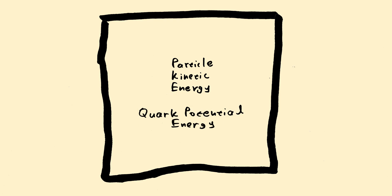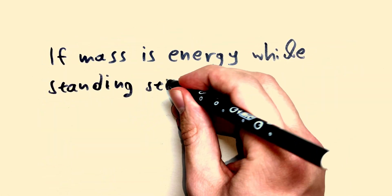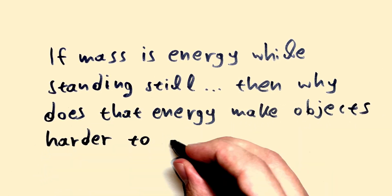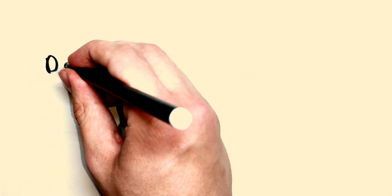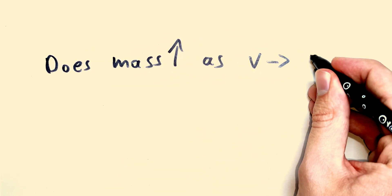If we wanted to, we could figure out what type of energy is hiding behind every object which has mass above zero. But still, there are tons of more questions to ask. Like, if mass is energy while standing still, then why does that energy make objects harder to accelerate?